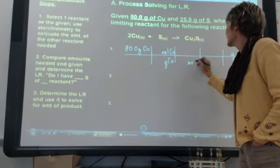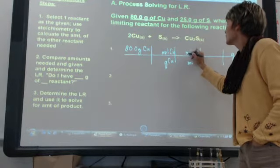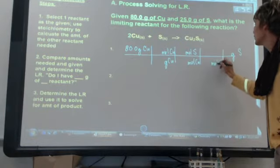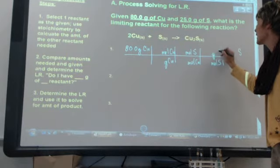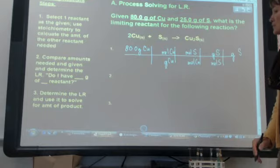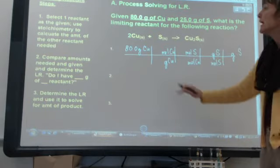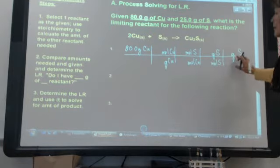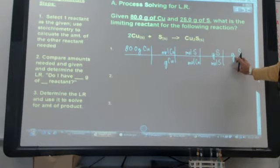And moles of copper to moles of sulfur. And once I get to moles of sulfur, then I can go to grams of sulfur. And so what I am doing here is I am saying if I use up all 80 grams of copper, how many grams of sulfur do you need?